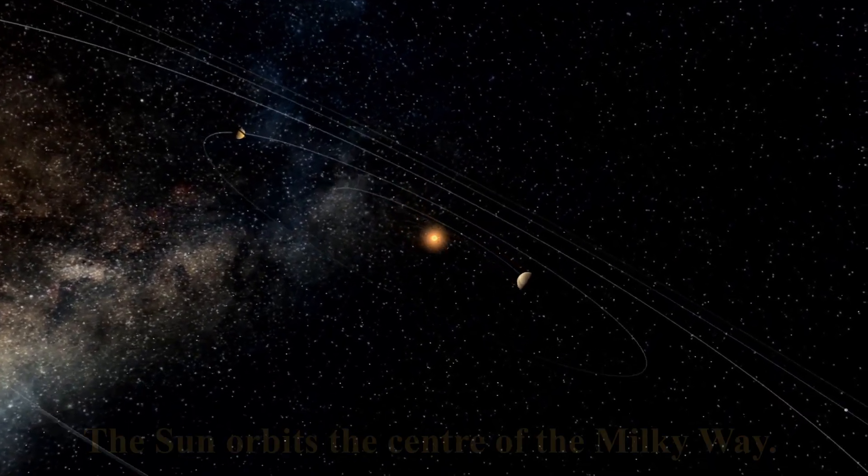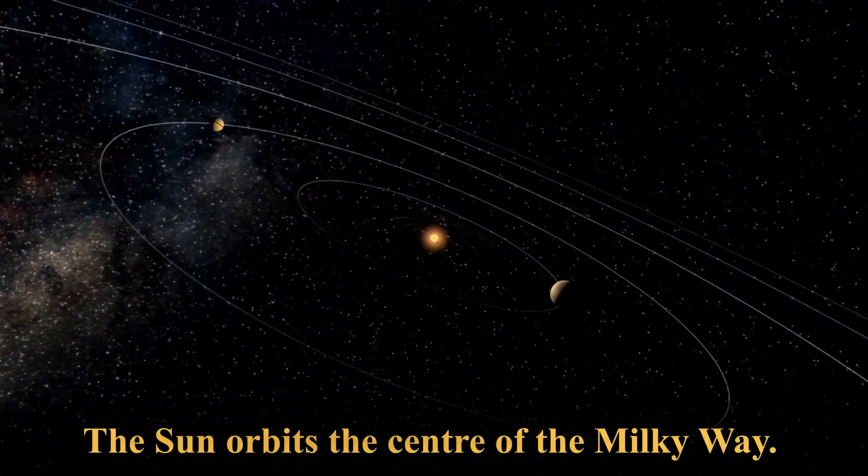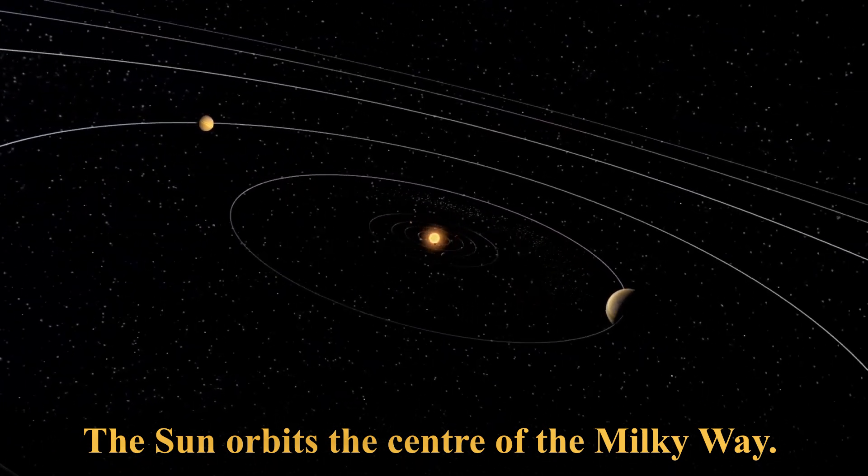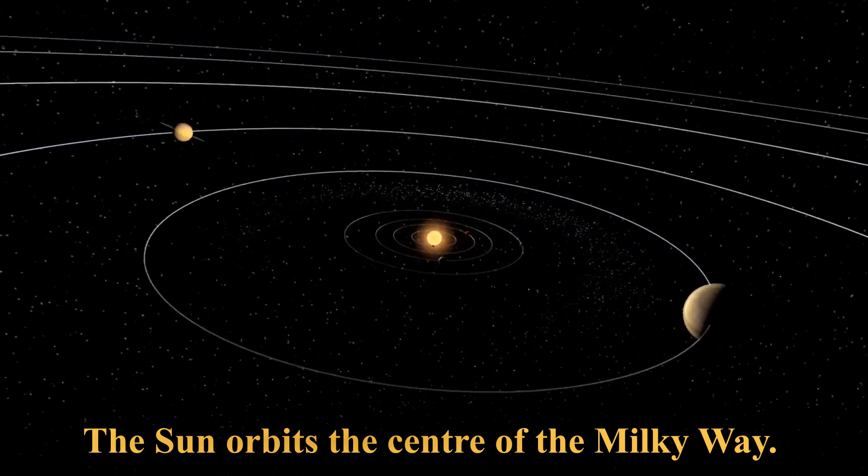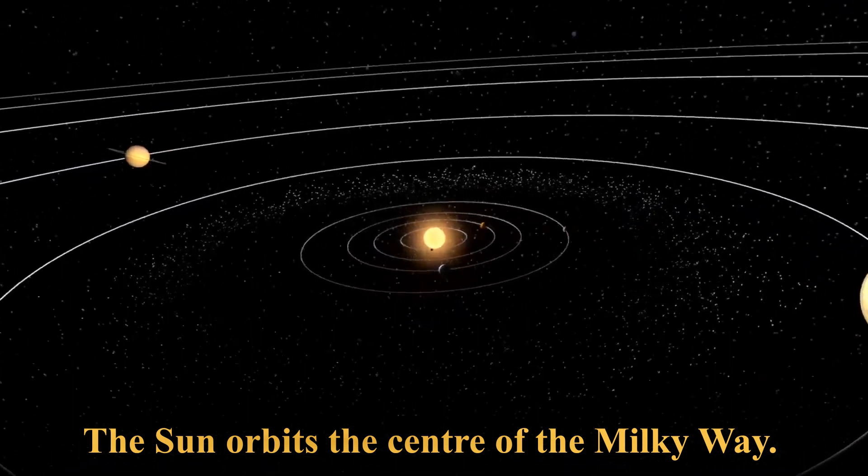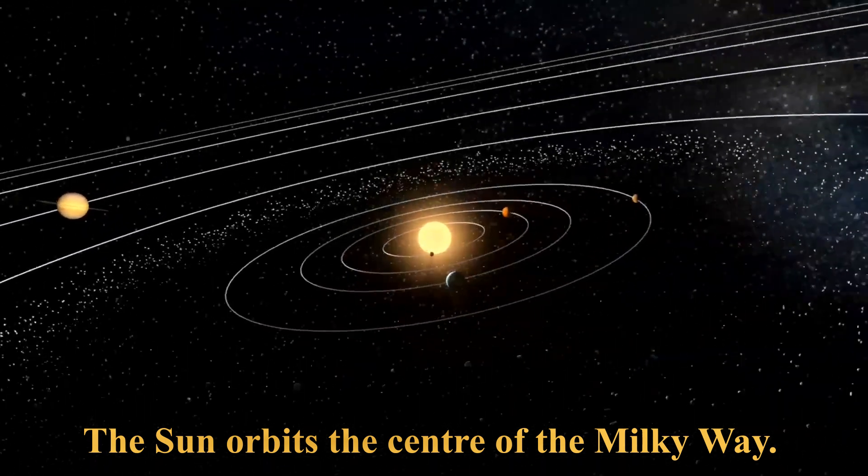The Sun orbits the center of the Milky Way. It takes the Sun approximately 250 million years to complete a cycle. So far, the Sun has circled the Milky Way 18 times over its lifetime.